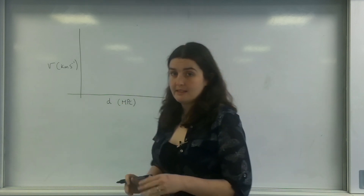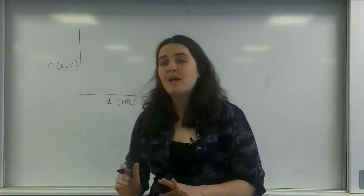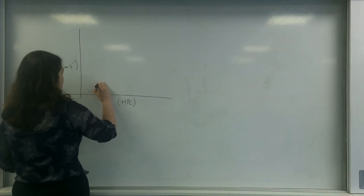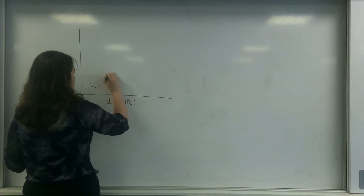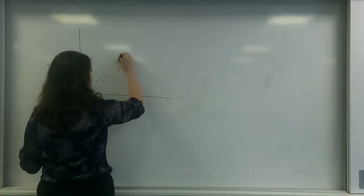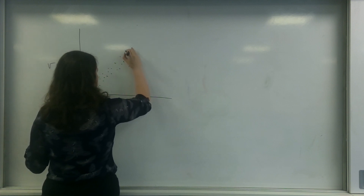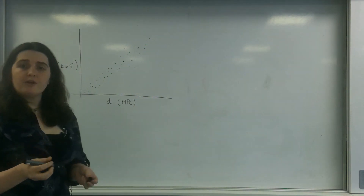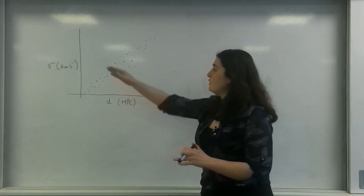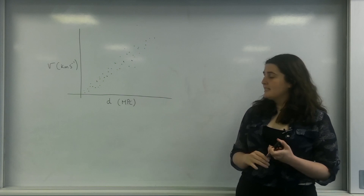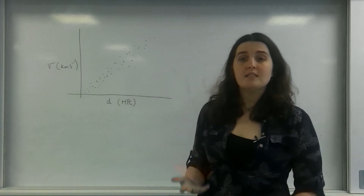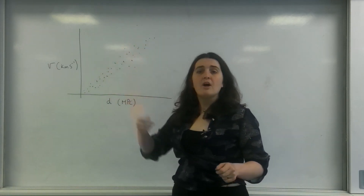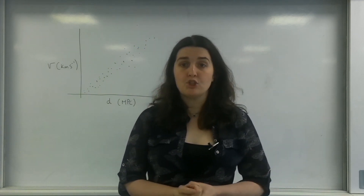And they got a graph that looked like this. Each one of those points represents a star with its own velocity due to redshift and its distance away. And as you can see, there is a positive correlation between the two.